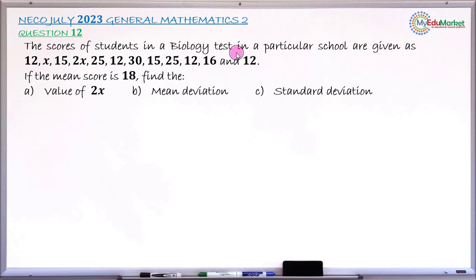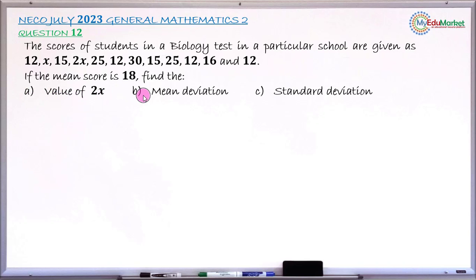The question reads: the scores of students in biology tests in a particular school are given as 12, X, 15, 2X, 25, 12, X, 15, 25, X, 12, 16, X, 12. If the mean score is 18, the question asks us to find: part A, the value of 2X; part B, the mean deviation; and part C, the standard deviation of this distribution.